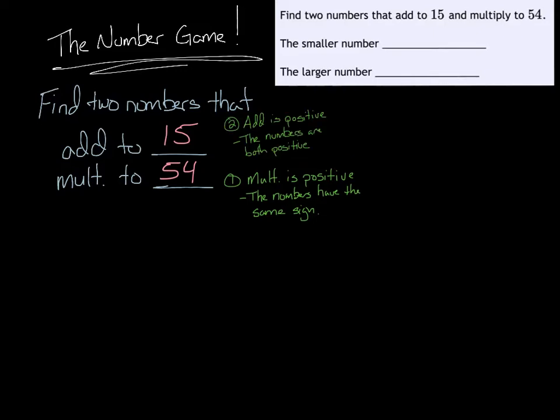So we know they both have the same sign, either both positive or both negative. The second thing is that the addition is positive. So to have two numbers of the same sign and have them add to a positive number, they both must be positive numbers. So before we start any kind of work, we know that these are both positive numbers and that's an important trick.